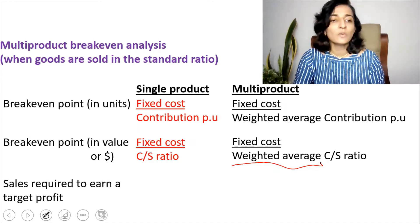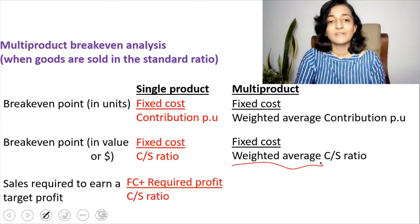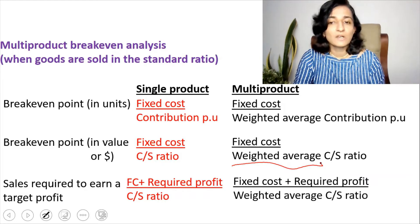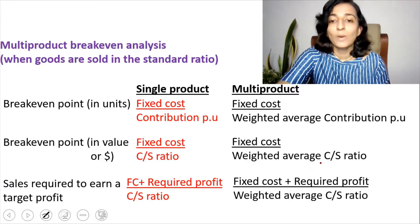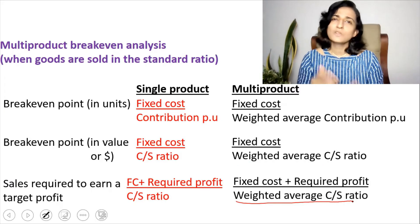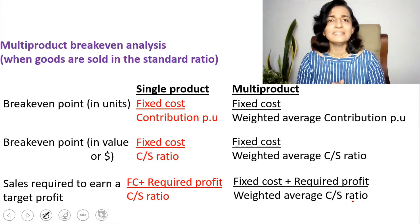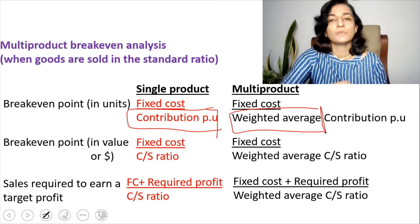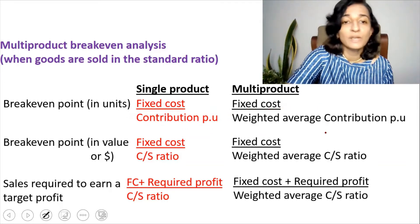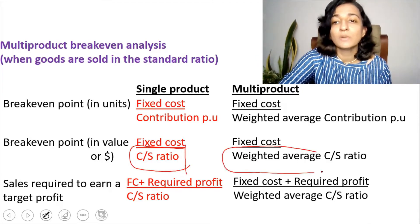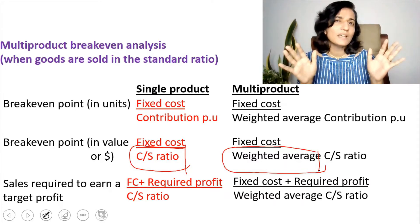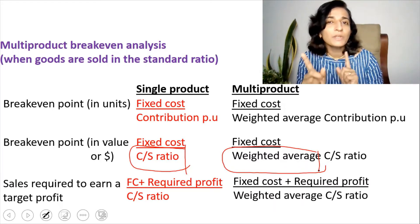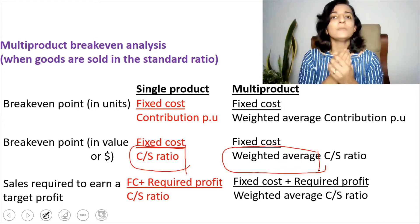The third formula — sales required to earn a target profit — is fixed cost plus required profit divided by C/S ratio for a single product, and fixed cost plus required profit divided by weighted average C/S ratio for multi-product. So the formulas are essentially the same, except that the contribution per unit and C/S ratio become weighted averages across all products.